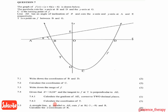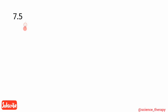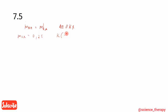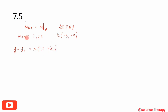Since g is parallel to AE, parallel lines share the same gradient. So gradient of KR = gradient of AE = 0.25. We have the coordinates of K(-3, -9) and the gradient 0.25. We use the point-slope formula to find the equation of the straight line g.